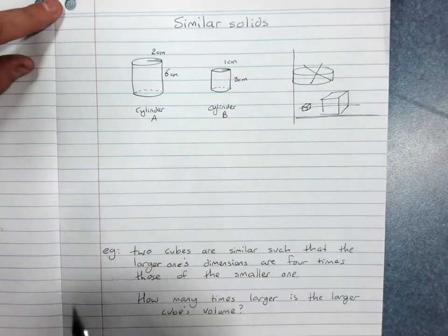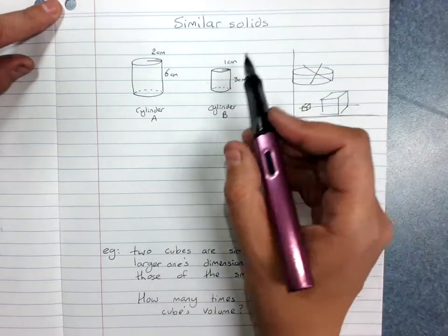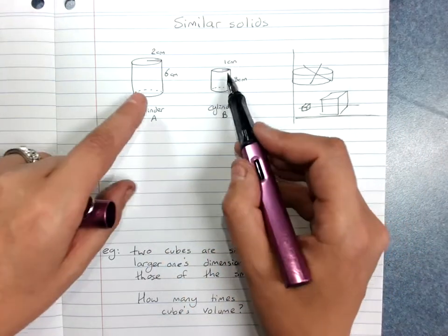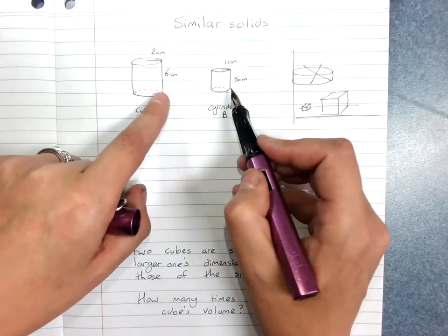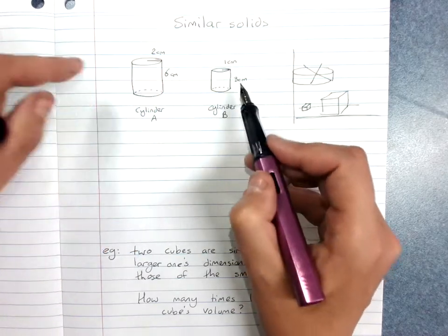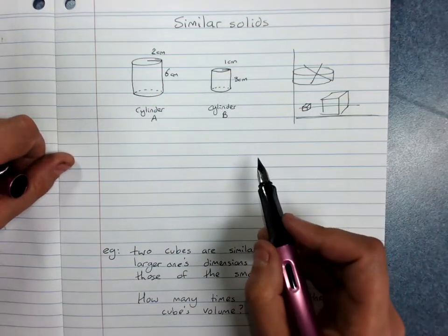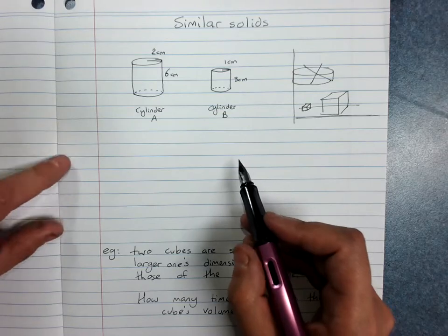So these cylinders are similar because the ratio of their sides are equal. Six divided by three is two, two divided by one is two, and they're the same shape.